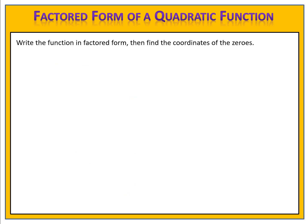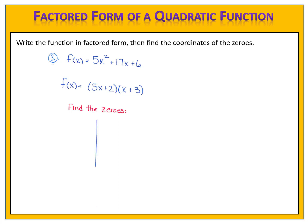Now let's take a look at another example. This time we have a function that's a trinomial with a leading coefficient of 5. Once again, we factor. When we factor, we end up with 5x plus 2 times x plus 3. We write f of x in front, and we now have the factored form of the quadratic function. We use those factors to find the zeros: 5x plus 2 equals 0, and x plus 3 equals 0.